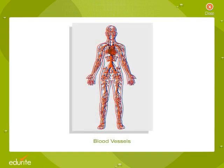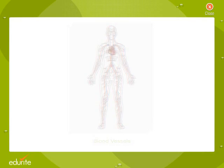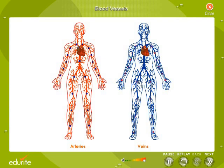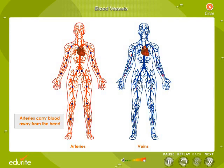Blood Vessels. Look at the given representation of blood flow from and into the heart. You can observe that some of the blood vessels carry the blood away from the heart and some carry the blood towards the heart. This is the basic concept for classifying blood vessels. Arteries carry blood away from the heart and veins carry blood towards the heart.